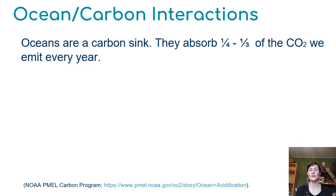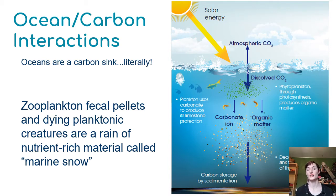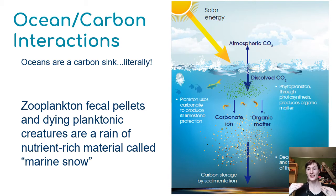Oceans are a carbon sink, meaning they absorb and store a lot of carbon — about a quarter to a third of the CO2 that we emit every year. A big part of that CO2 absorption is by photosynthesizers: our phytoplankton are taking in CO2 and building it into molecules, making tissues. They're probably unicellular organisms, so they'll turn into somebody else's tissues. CO2 comes out of the air into the water and becomes part of organisms. CO2 can also simply be dissolved in those surface layers of ocean water.